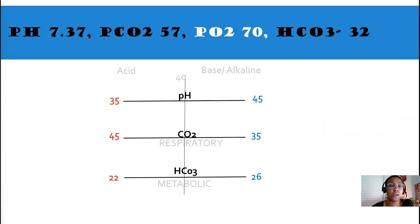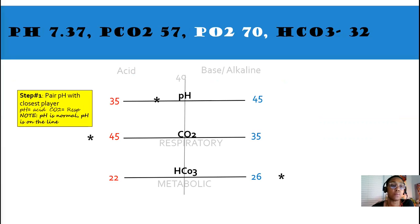Here's our next ABG. pH is 7.37. CO2 is 57. Bicarb is 32. Step number two, and we have an O2 of 70. Step number one, pair the pH with the closest player. Note that the pH is within normal range because it's on the line.